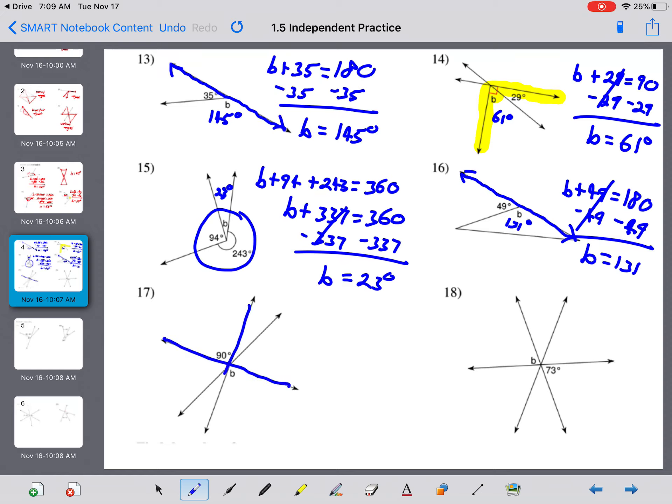In this bottom corner here, we have vertical angles again for 17, which means B is equal to 90 degrees. Same thing here for number 18. We have vertical angles again. That means they are congruent. B equals 73 degrees.